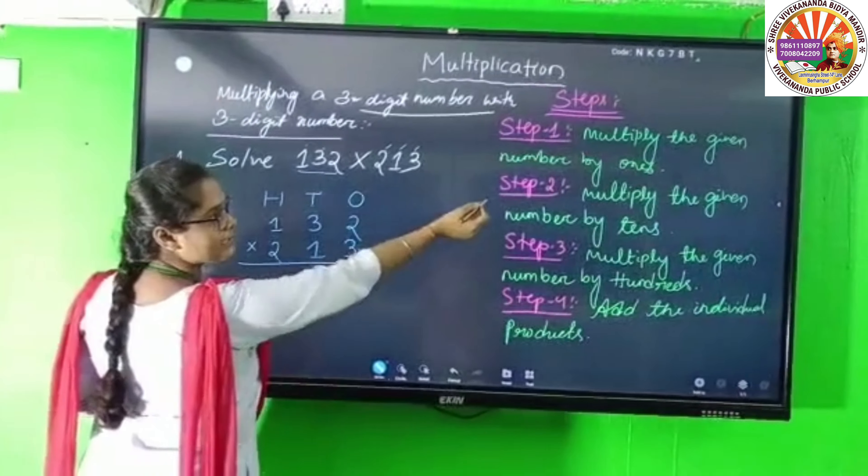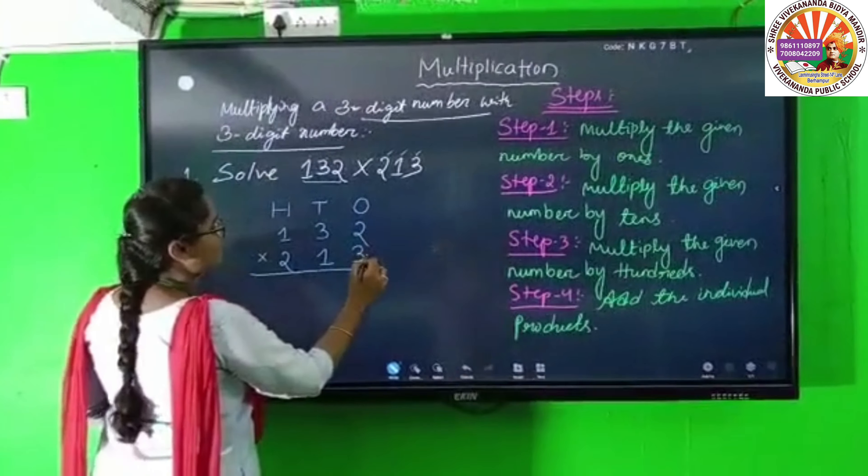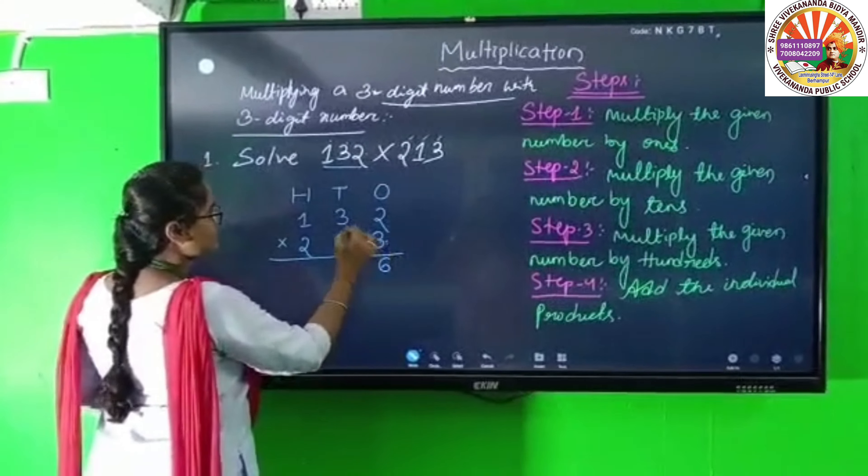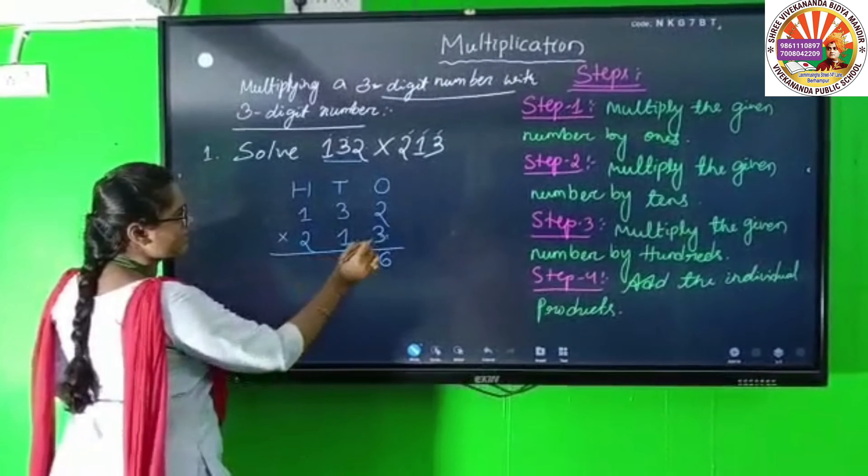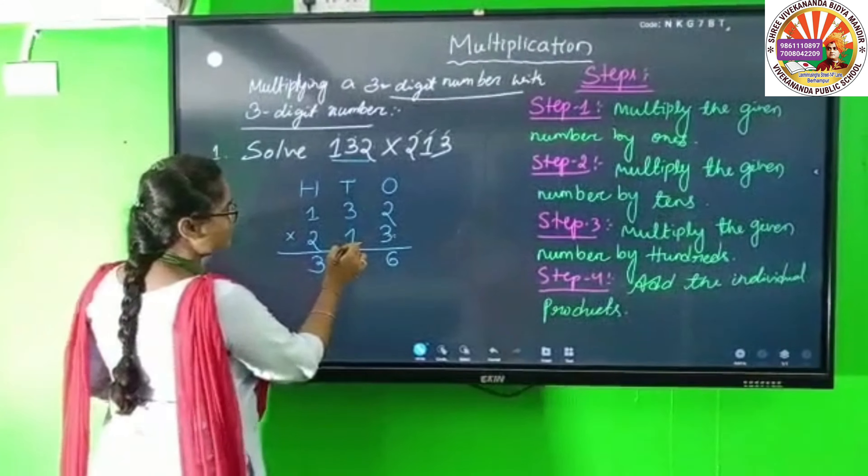This is the first step, multiplying by ones. When you multiply the given number by ones: 3 times 2 is 6, 3 times 3 is 9, 3 times 1 is 3. Now we have 396.